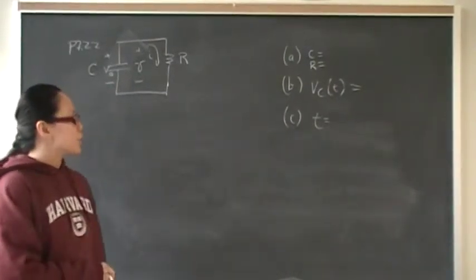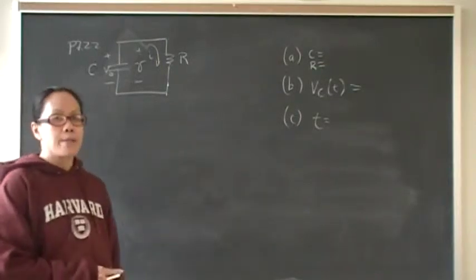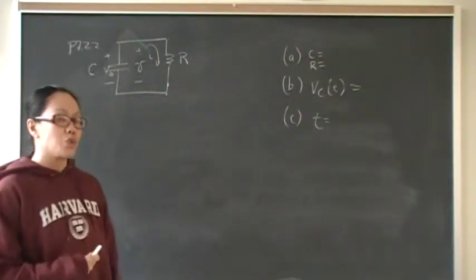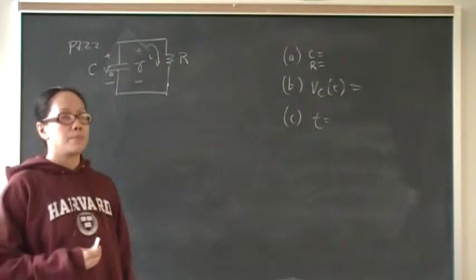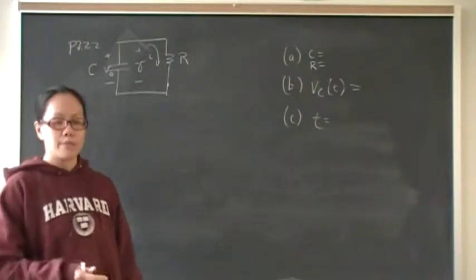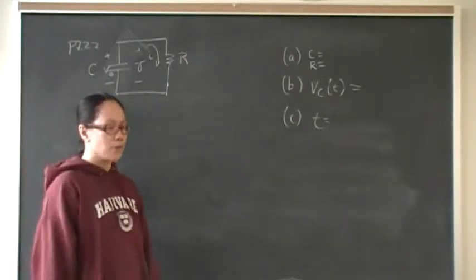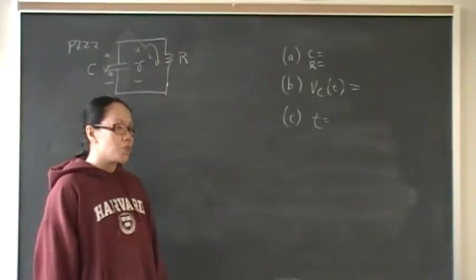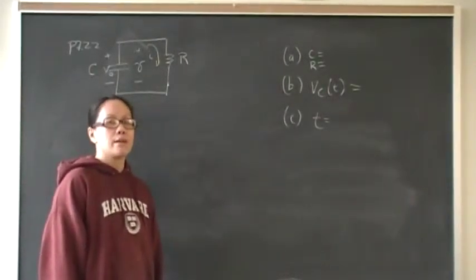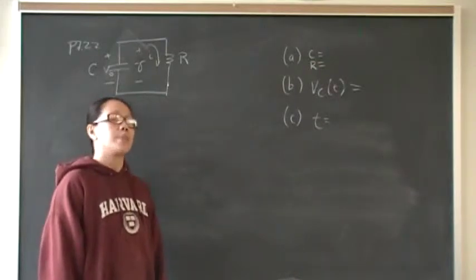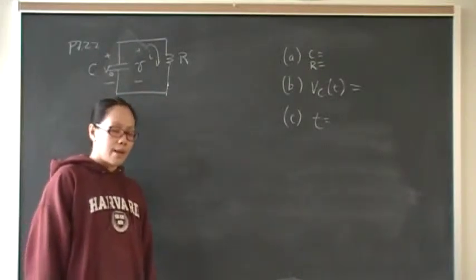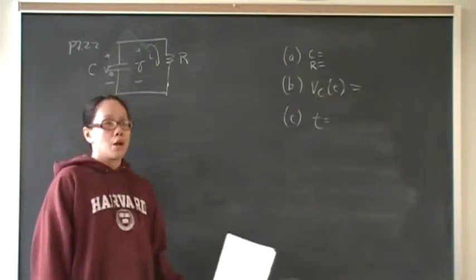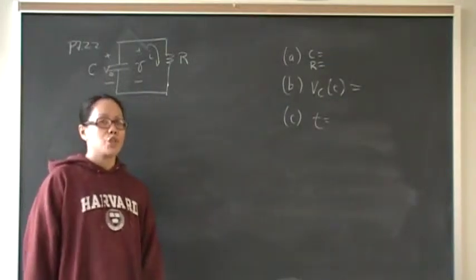Part C we want to find the time for which the voltage will reach 10 volts, so when it will use up 40 volts of that initial 50 volts. To do that you're going to set your general equation which you found in Part B, set that to 10 and solve for time. So that's how I approach those three problems. Go ahead and pause the video and give it a shot.